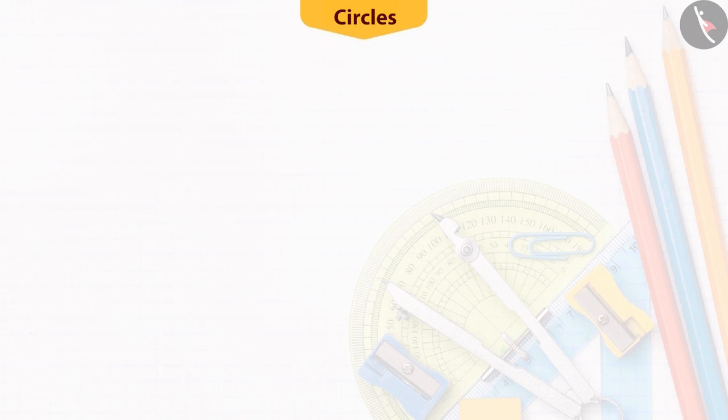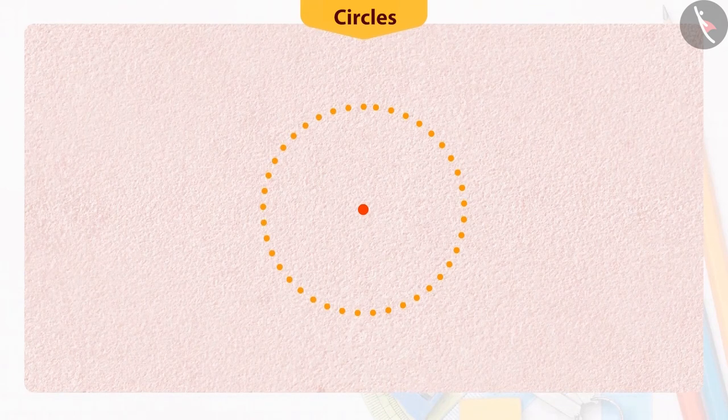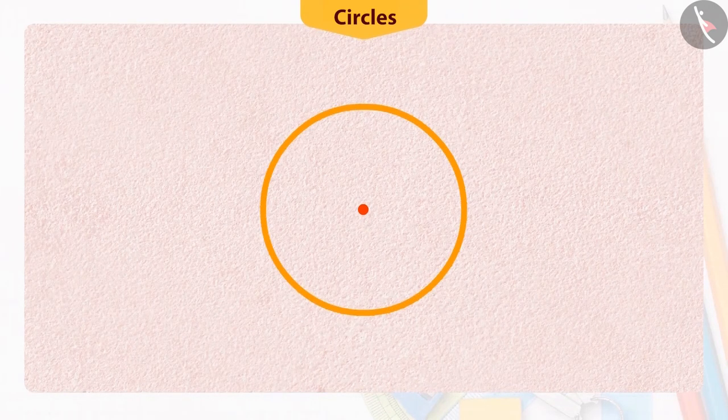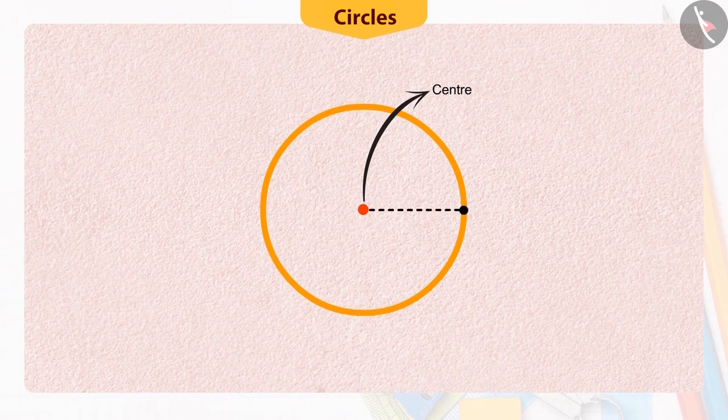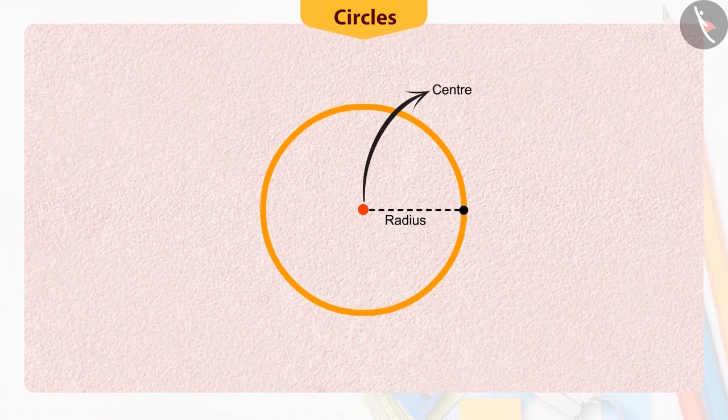We learned in the previous class that circle is a collection of all points which are at a constant distance from a fixed point in a plane. The fixed point is called the center of the circle and the fixed distance is called the radius of the circle.